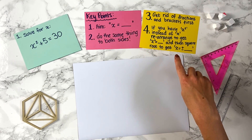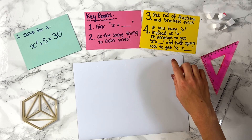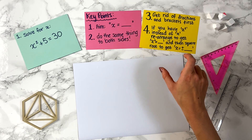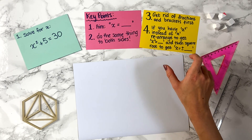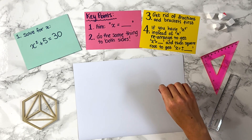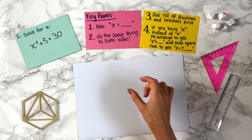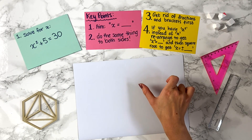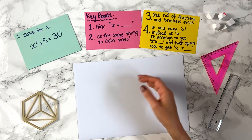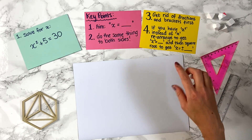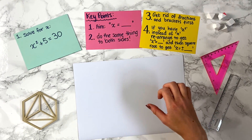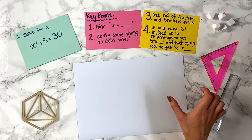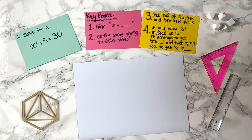Another key point: if you have x squared mentioned in the question instead of just x, you can rearrange to get x squared equals something, and then you take the square root and you'll get x equals plus or minus something. Let's have a look at how that works now.